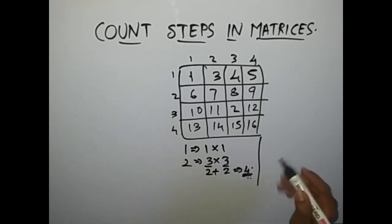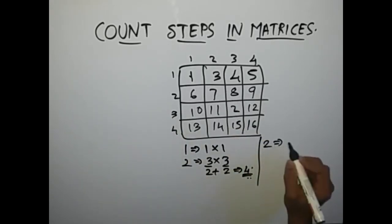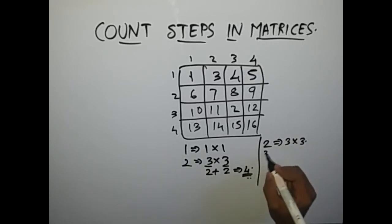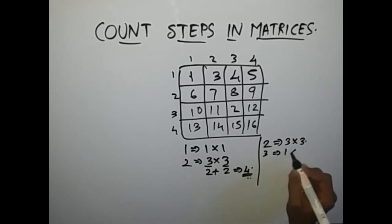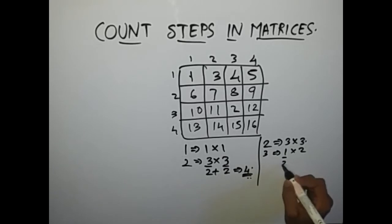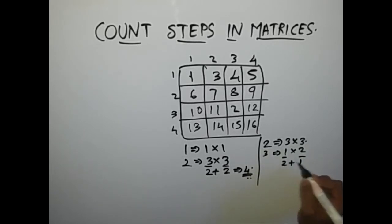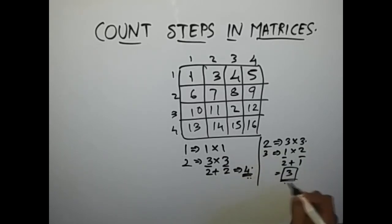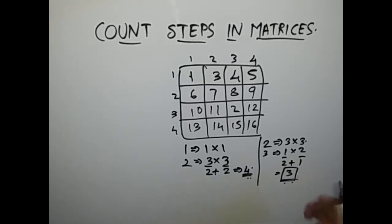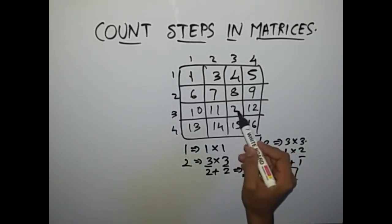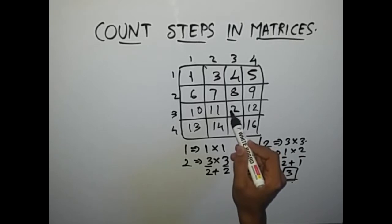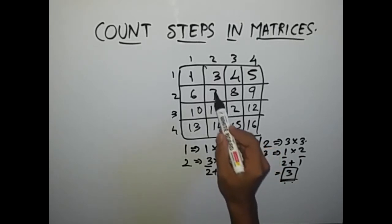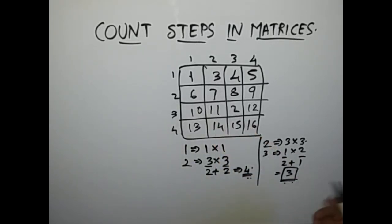Let me prove it by taking another example — travelling from 2 to 3. Element 2 is present at row 3, column 3, and element 3 is present at row 1, column 2. The row difference is 2, the column difference is 1, and the addition becomes 3. So we require 3 moves. We traverse 1 step, 2 steps, 3 steps. This is the logic — find the absolute difference between rows and columns and add them.